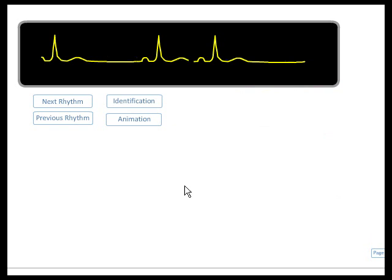In this slide, we have a regular rhythm with a P wave in front of every QRS. The PR interval is constant with normal width, and the QRS is narrow. Now, the rate is about 30 to 35.